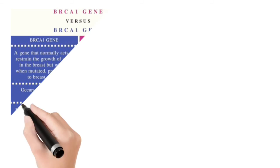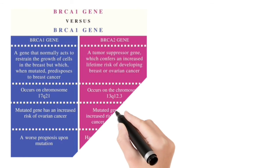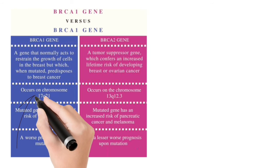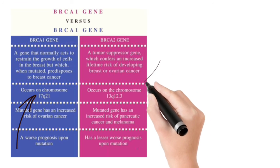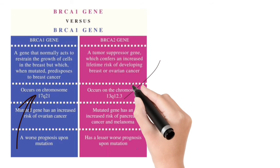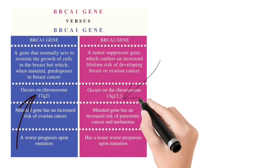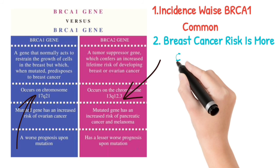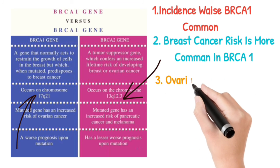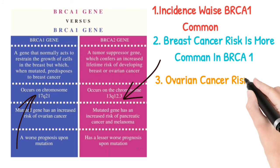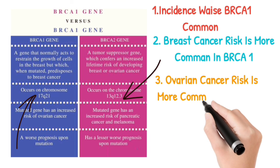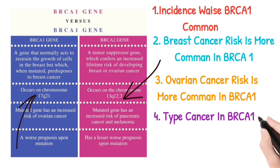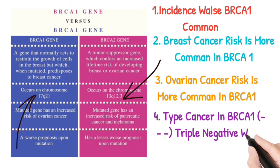Now we will discuss the difference between BRCA1 and BRCA2 genes. BRCA1 is present on the long arm of chromosome 17, while BRCA2 is present on the long arm of chromosome 13. Incidence-wise, BRCA1 is more common. Breast cancer risk and ovarian cancer risk are both more common in BRCA1.